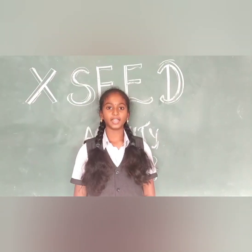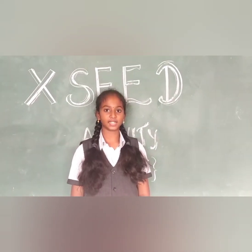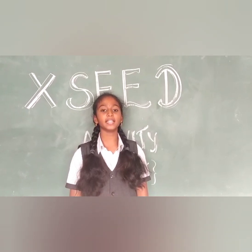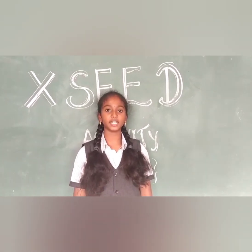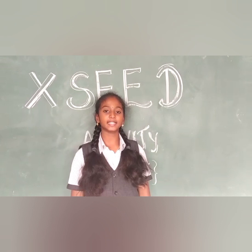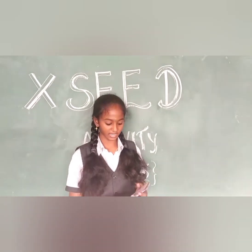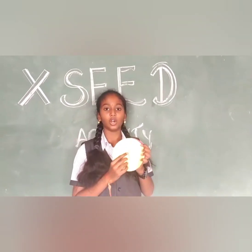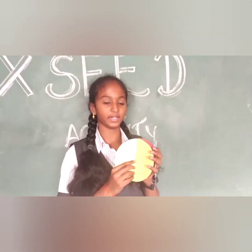Hi, I am going to tell about like fractions. Like fraction: if the denominator is the same for all the fractions, it is called a like fraction. For example, if the counting part is 1 and there are 2 parts, the denominator is 2.